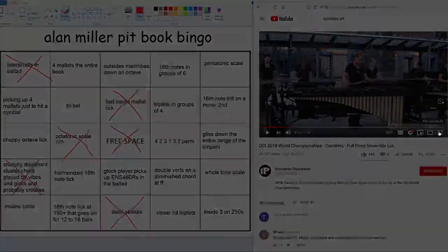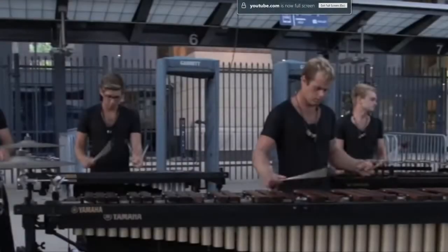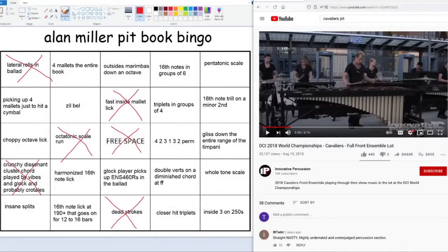Alright, if we look at the Glock player here. He's holding the old ENS-460Rs. I have heard that no other chords use this mallet. And if you've ever seen Alan Miller's writing on the page, he will not write notes without specifying which mallet you should be holding to play those notes. So, he writes a lot for these mallets in the ballad.